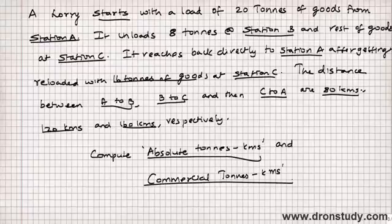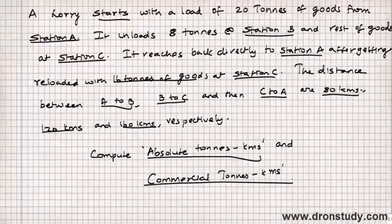To recap: absolute tons kilometers are the sum total of tons kilometers arrived at by multiplying the various distances by their respective load quantities, whereas commercial tons kilometers is the simple average — arrived at by multiplying total distance kilometers by average load quantity.